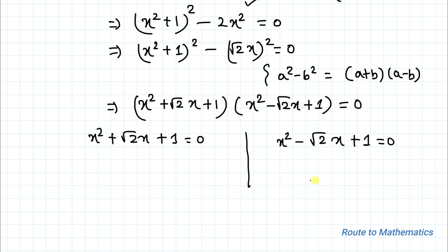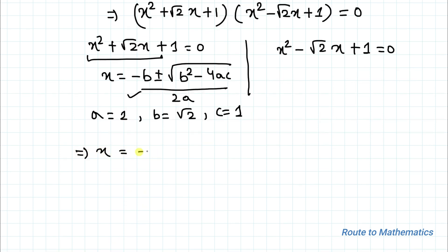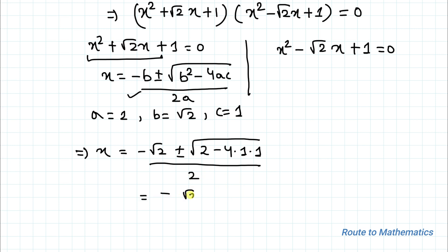From here we write two quadratic equations: x squared plus root 2 x plus 1 equals 0, and x squared minus root 2 x plus 1 equals 0. To find x, we apply the quadratic formula: x equals minus b plus or minus root under b squared minus 4ac, divided by 2a. For the first equation, a equals 1, b equals root 2, and c equals 1. Substituting: x equals minus root 2 plus or minus root under 2 minus 4, divided by 2, giving root of minus 2 divided by 2.